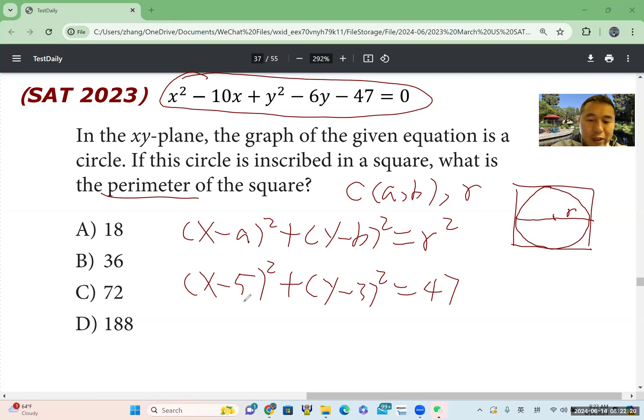And don't forget here, actually we add 25. So right side also need to add 25. Then same thing here, add 3 squared is 9 in left side. So right side, we also add 9. So together, we get 81, which means r². So we can get r equal to 9.